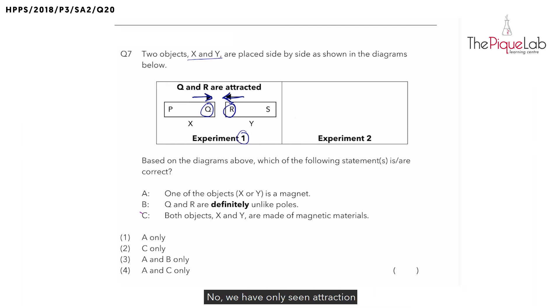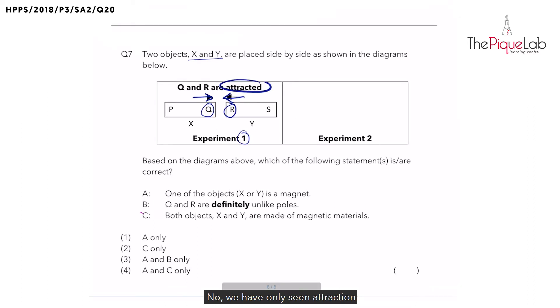But there is something that we can conclude based on the first experiment. X and Y have attracted. In order for attraction to take place, at least one of the objects has to be a magnet. If not, attraction would not have even occurred. So for Experiment 1, we can conclude that at least one is a magnet.